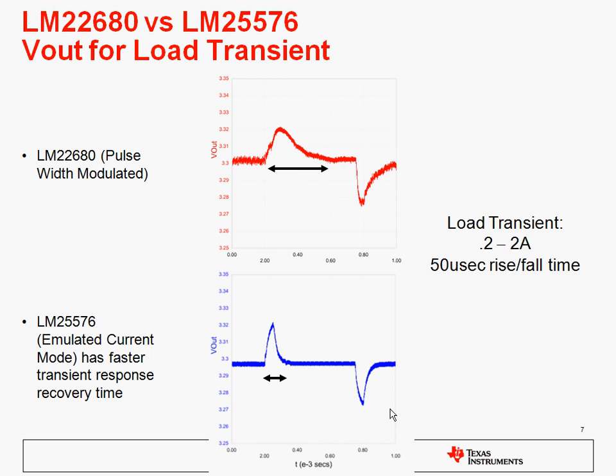And here's the simulation results. In red at the top there is the PWM part. And you can see that the overshoot is about 20 millivolts or so, and the recovery time is roughly in the order of about 500 to 600 microseconds. For the emulated current mode part, the overshoot is roughly the same, but the recovery time is faster.